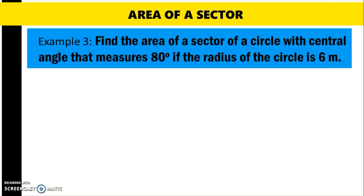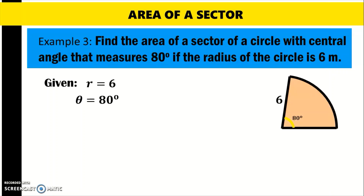Another example: find the area of a sector of a circle with central angle that measures 80 degrees if the radius of the circle is 6 meters. The given in this problem are radius equals 6 and theta equals 80 degrees. The illustration shows theta is 80 degrees and the radius is 6 meters.